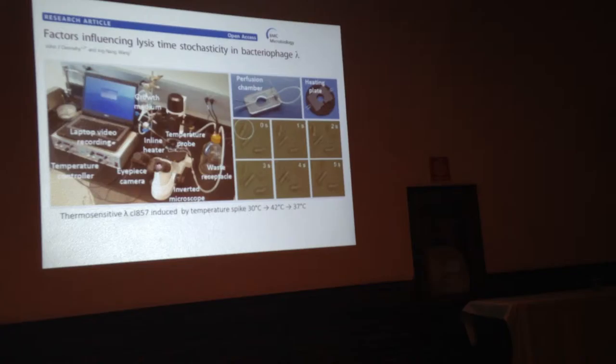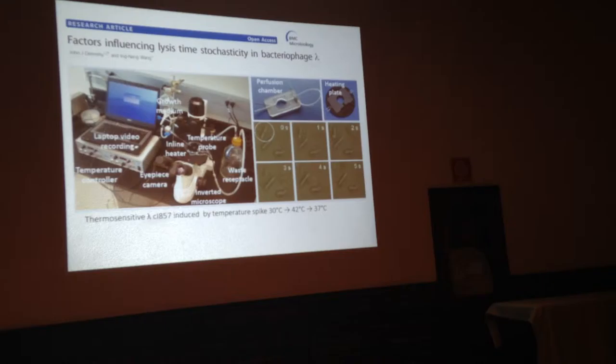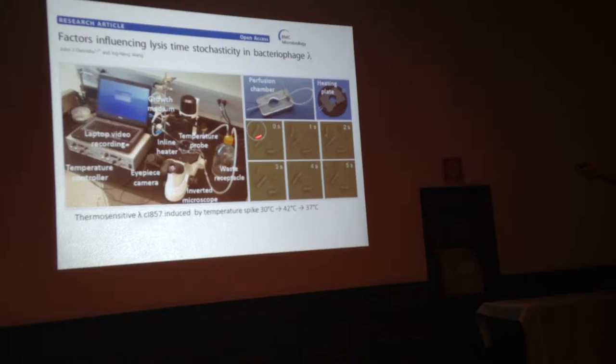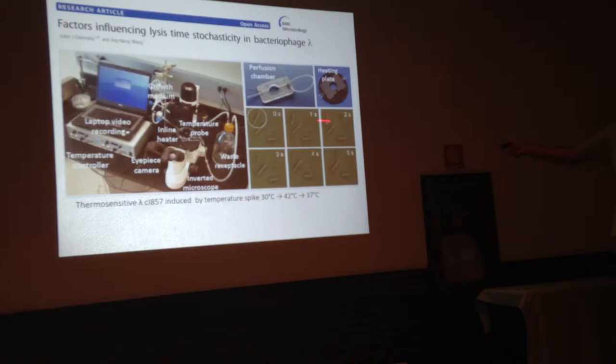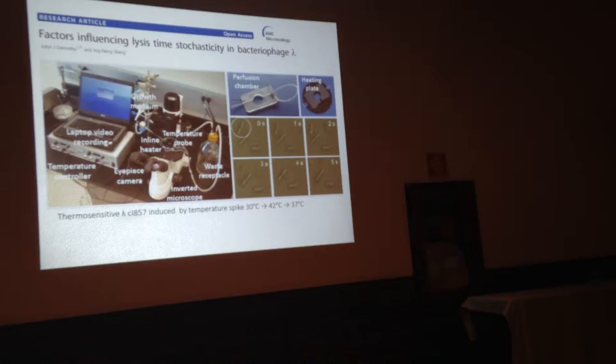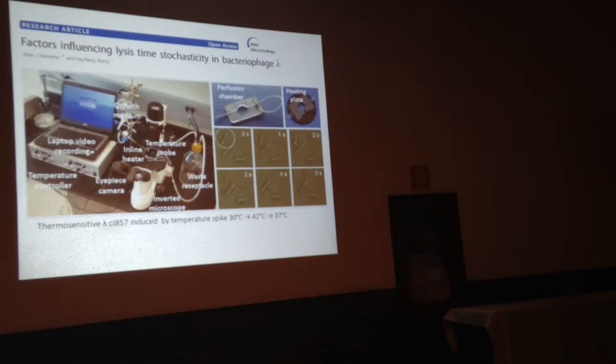We're able to go back and experimentally test these hypotheses using this setup here. We essentially look at a single cell over time following induction, which we're able to induce the phage to lyse by using a temperature spike. When the cell disappears, we're able to say this cell lysed at 60 minutes, maybe another one at 55, another one at 65, and you get the mean and distribution.